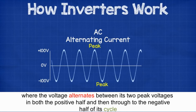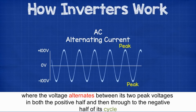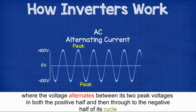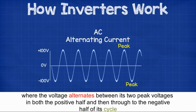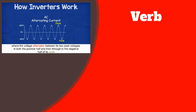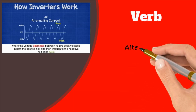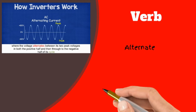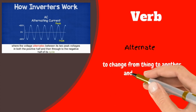Where the voltage alternates between its two peak voltages in both the positive half and then through to the negative half of its cycle. Alternate: to change from one thing to another and back again.